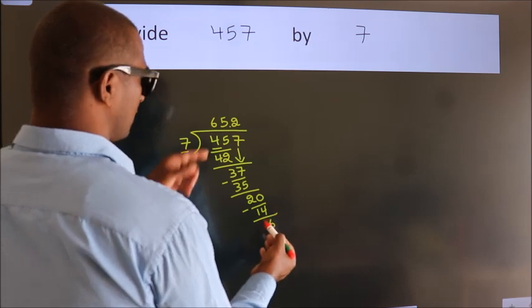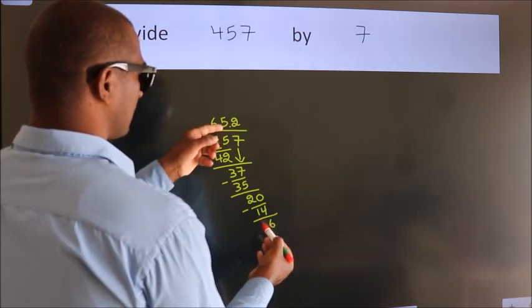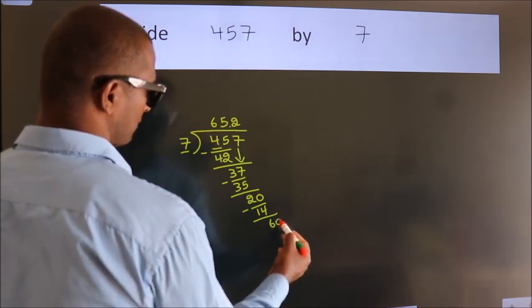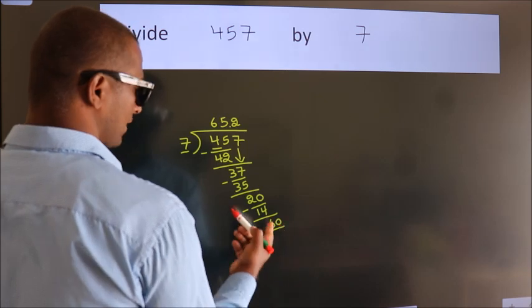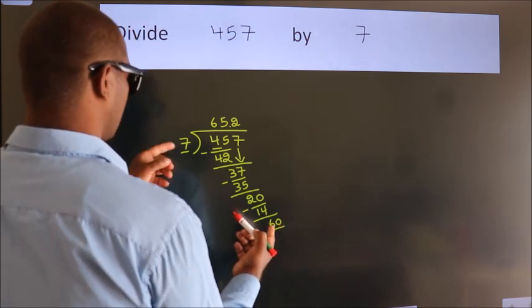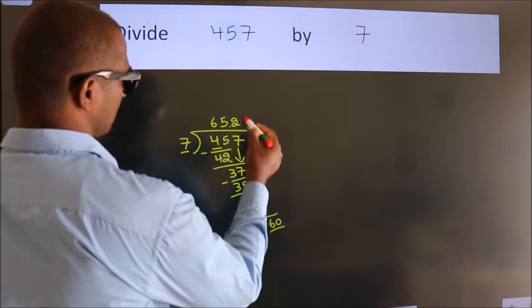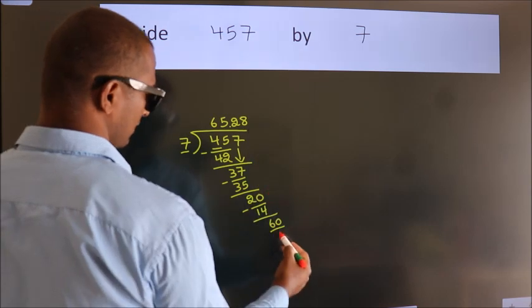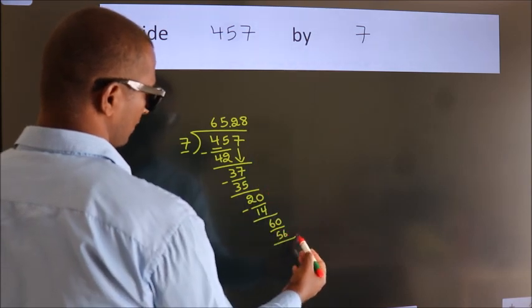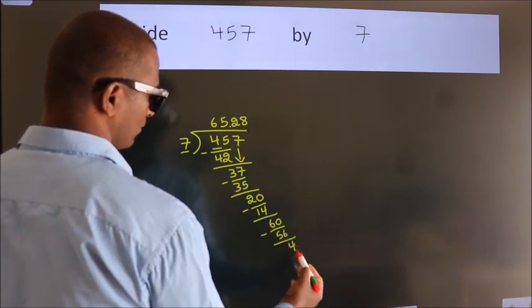After this, we already have the decimal, so directly take 0, making 60. A number close to 60 in the 7 table is 7 times 8, which is 56. Now we subtract. We get 4.